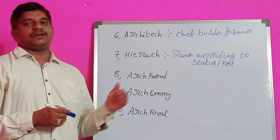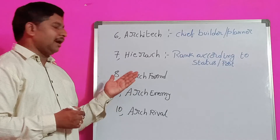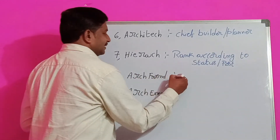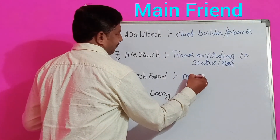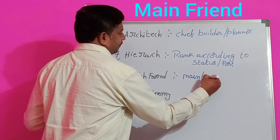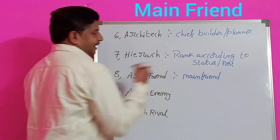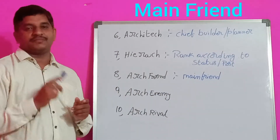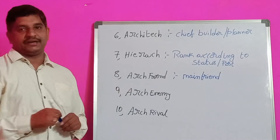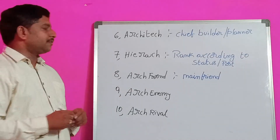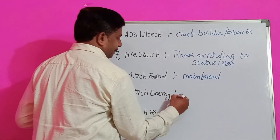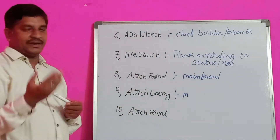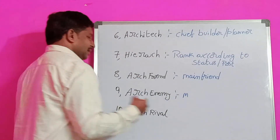Arch also means main or chief. Arch friend means main friend — we have many friends but one friend is the main one who helps in problems. That is called arch friend. Arch enemy — the completely opposite — the one enemy who is the main enemy. That is called arch enemy.